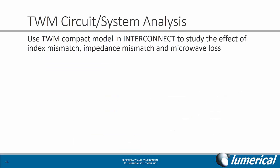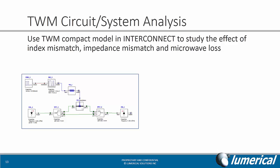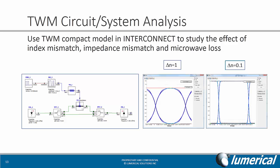Finally, in addition to the component level simulations, you may want to see how the modulator behaves at the circuit level, taking into account all the results from the component level simulations. The traveling wave modulator compact model in Interconnect can be used here to study the effect of index mismatch, impedance mismatch, and microwave loss. You can, for example, look at how the eye diagram is affected by these properties.